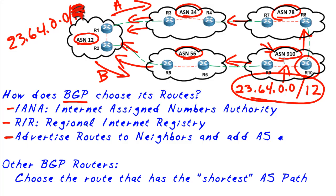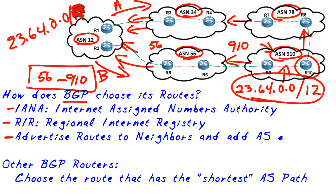The way it works is this: when ASN 910 advertises the route, it appends a little attribute called the AS path — a list of which autonomous systems the route has been advertised through. When AS 56 advertises it onward, it tacks on its autonomous system number 56. So when this route shows up on path B, it will show it went through AS 910 and AS 56. On path A, it will show it went through AS 910, AS 78, and AS 34 — three autonomous systems on path A versus two on path B.